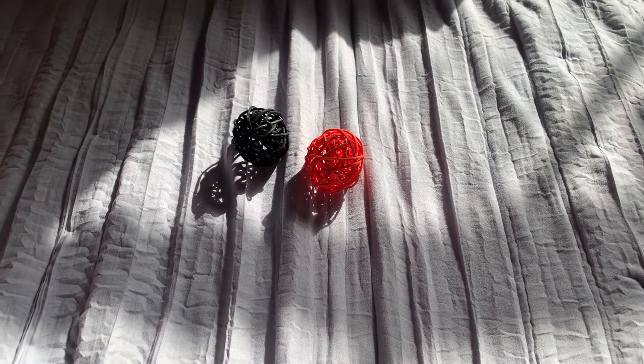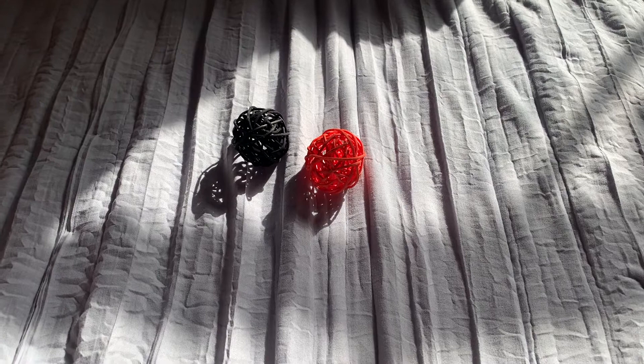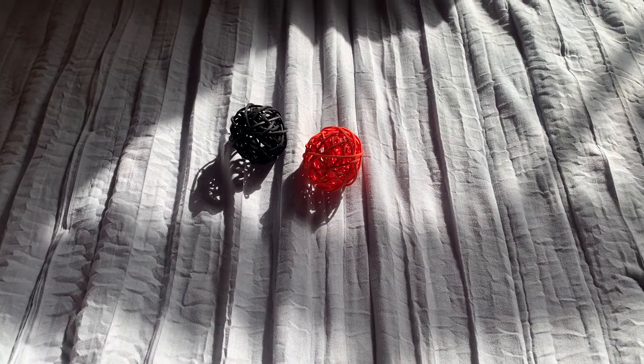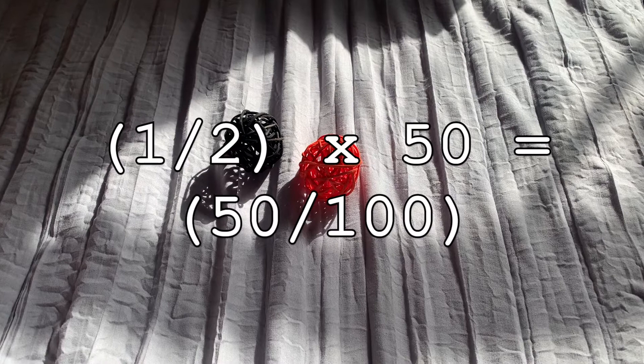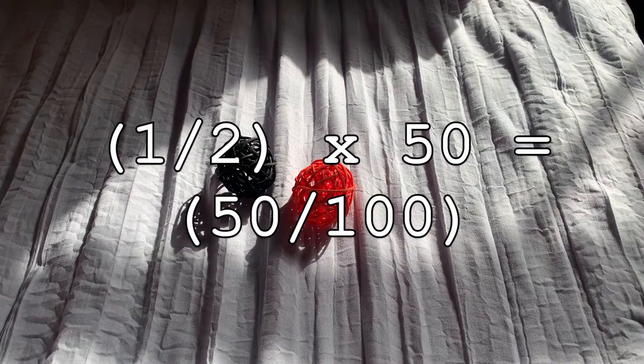To decide the percentage of Eva choosing this toy, we must convert the fraction into a percentage. To do this, we must convert the denominator, which is 2, into 100, which will help us find the percentage. So 100 divided by 2 would be 50. Multiply 2 by 50 and you'll get 100. So if you multiply 1 by 50, it will be 50 over 100.